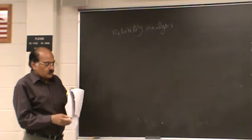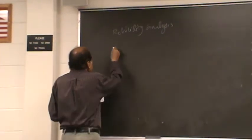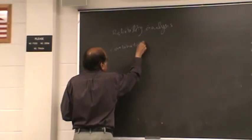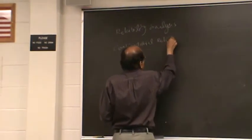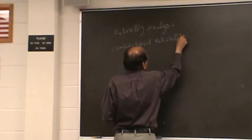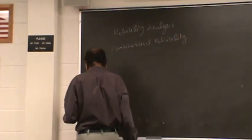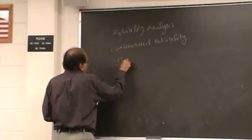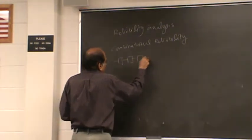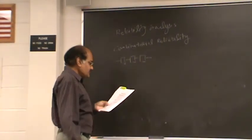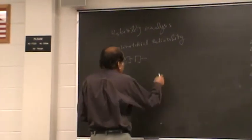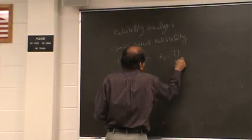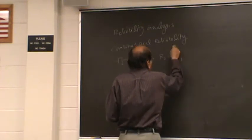Now we are looking at combinatorial reliability. We consider the case when all the units are essential, and in that case we have seen that rs equals the product, i equals 1 to n, of ri.